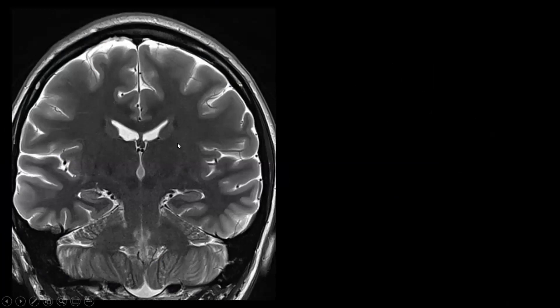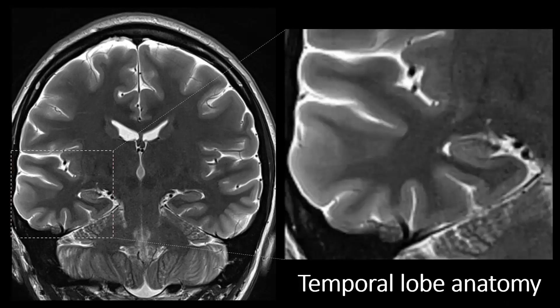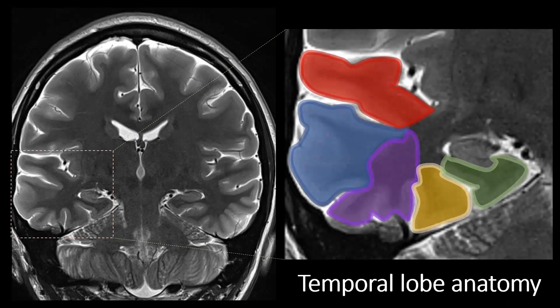The hippocampus is located in the temporal lobe. We have two of them, and the temporal lobe has two surfaces. It has a lateral surface, which consists of three gyri, and it has a basal surface, which consists of two gyri. And then we have the hippocampus sitting on top of the most medial basal temporal gyrus, located at the innermost medial part of the temporal lobe.